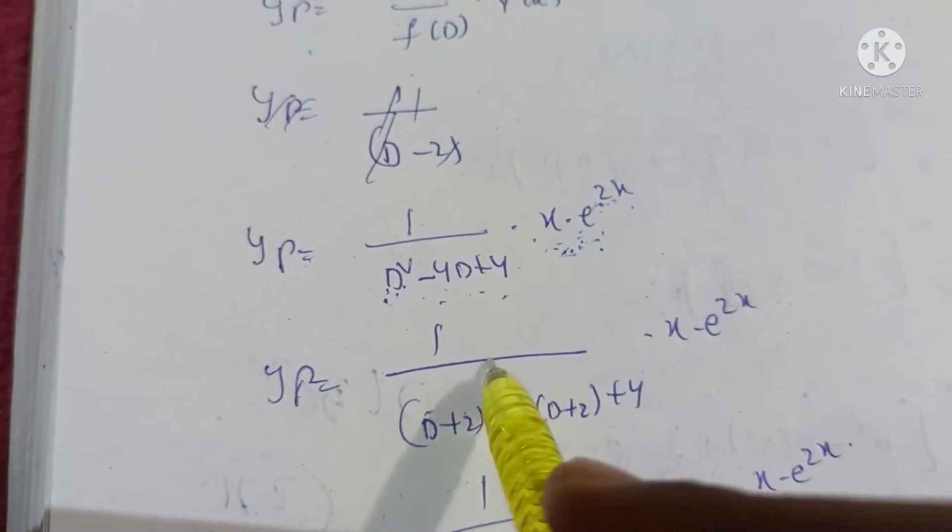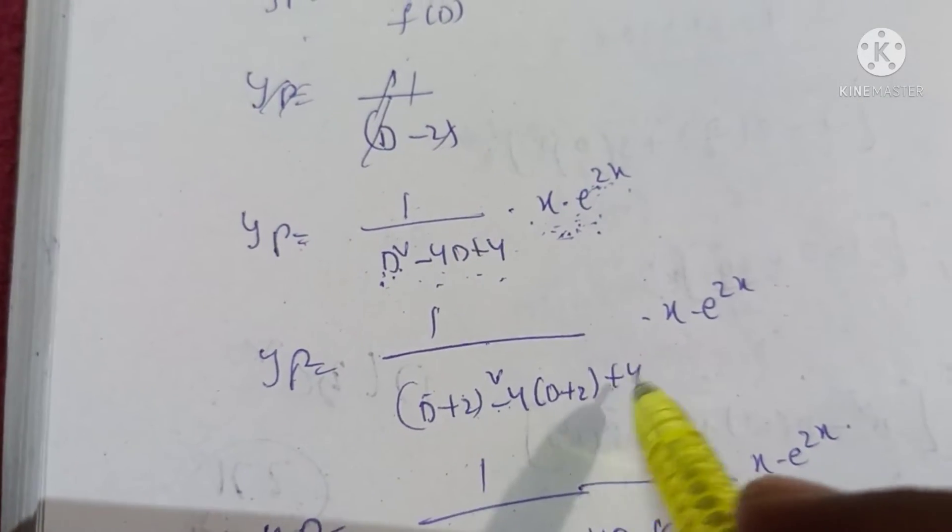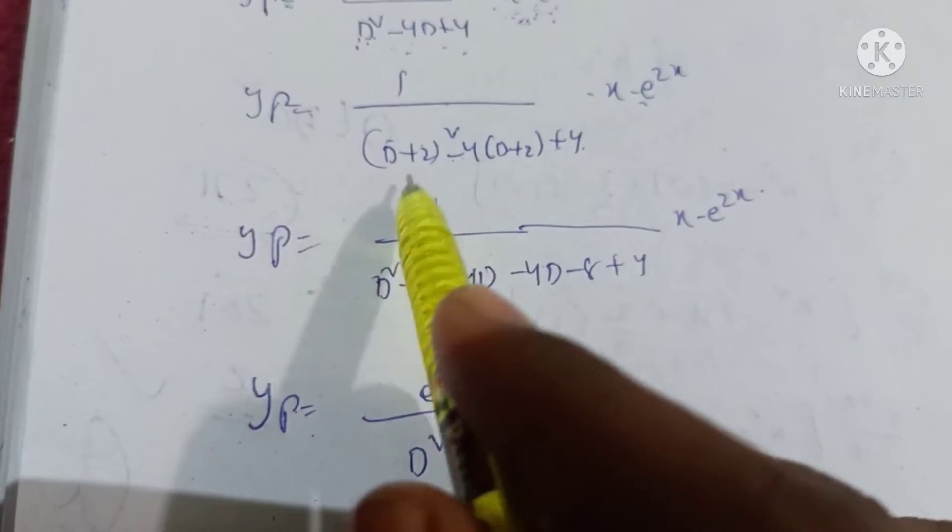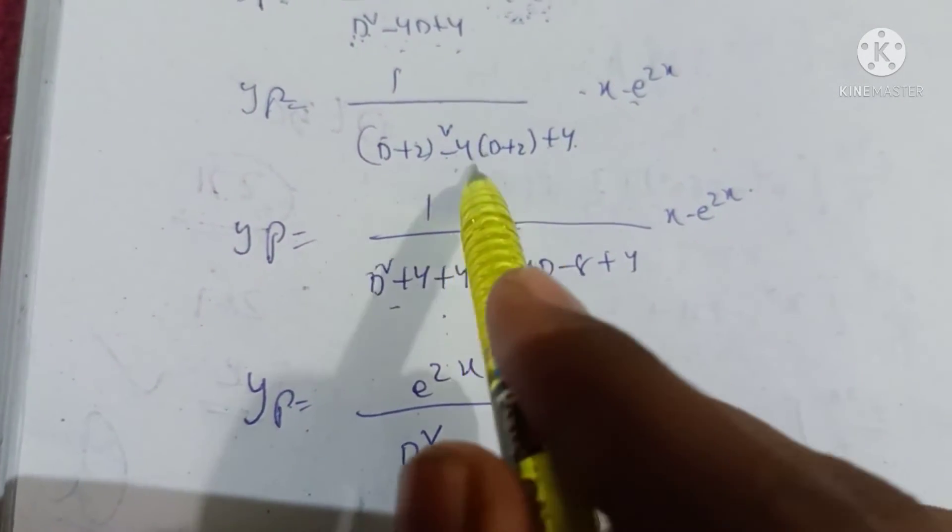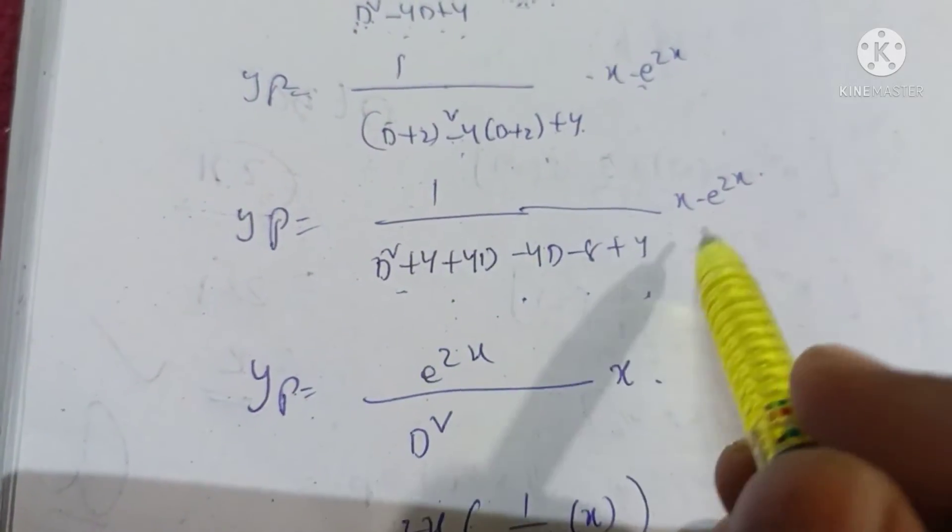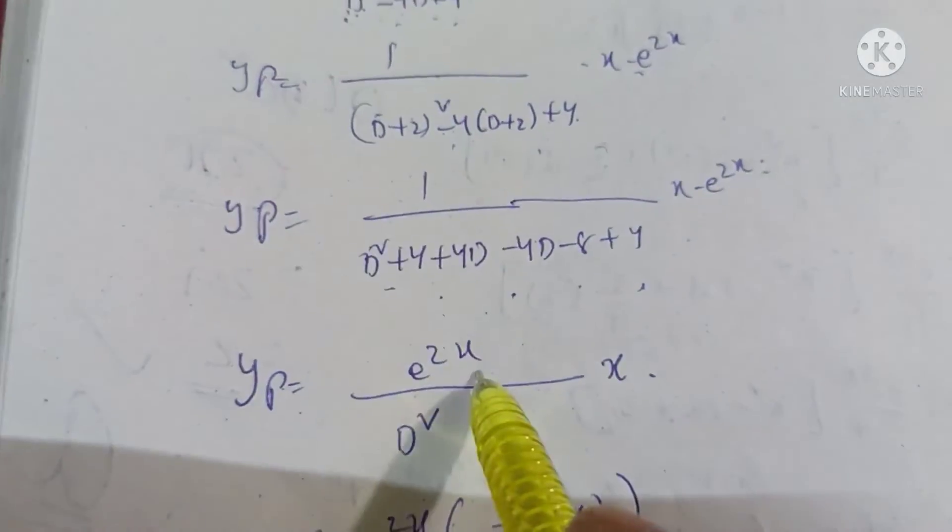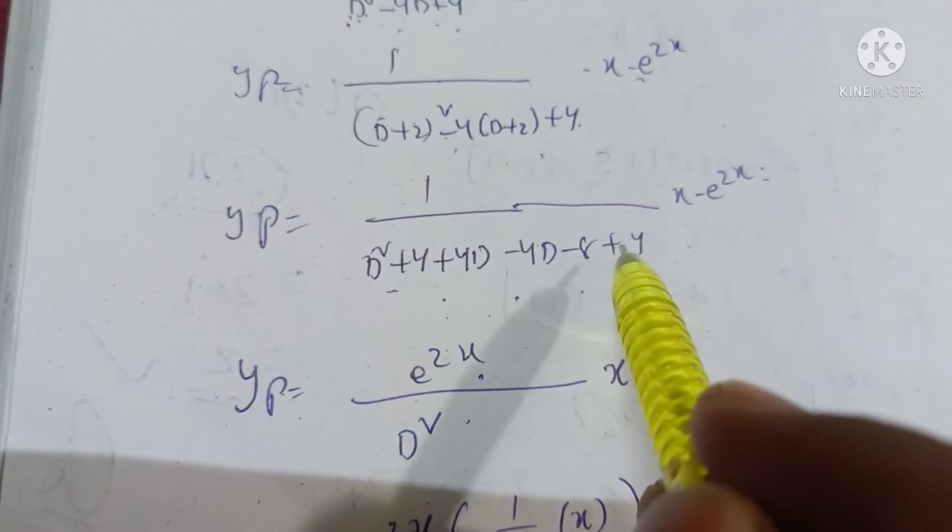1 by d plus 2 whole square minus 4 into d plus 2 plus 4. 1 by d square plus 4 plus 4d minus 4d minus 8 plus 4 into x into e power 2x. e power 2x by, plus 4 plus 4, 8 minus 8, 0.